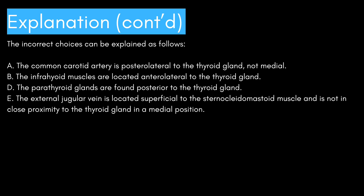The incorrect choices can be explained as follows. A: the common carotid artery is posterolateral to the thyroid gland, not medial. B: the infrahyoid muscles are located anterolateral to the thyroid gland. D: the parathyroid glands are found posterior to the thyroid gland. E: the external jugular vein is located superficial to the sternocleidomastoid muscle and is not in close proximity to the thyroid gland in a medial position.